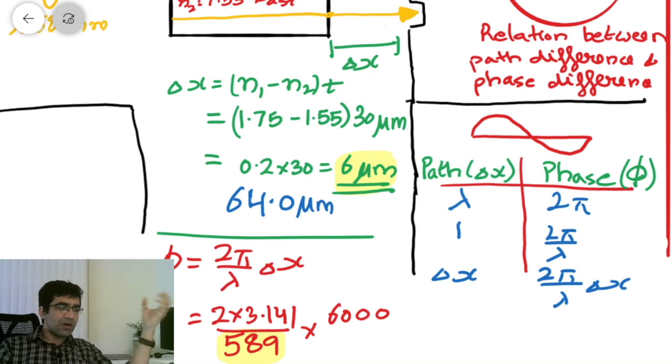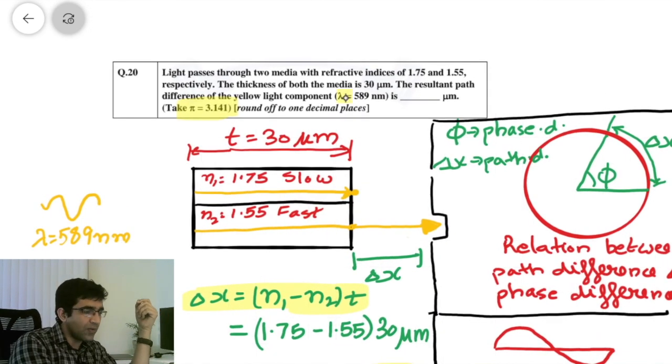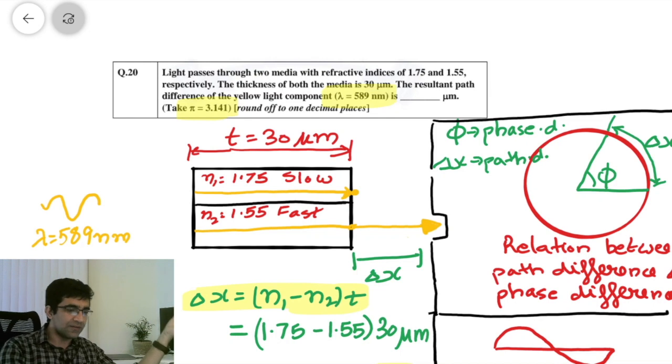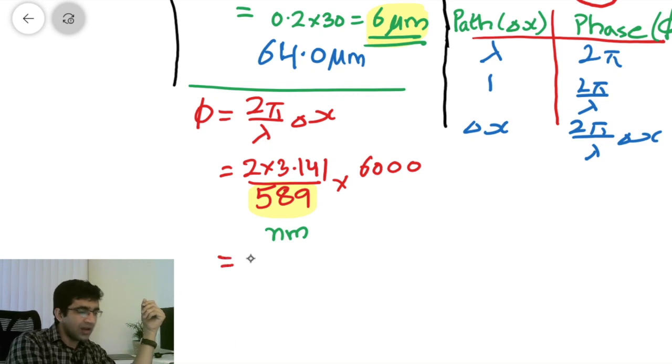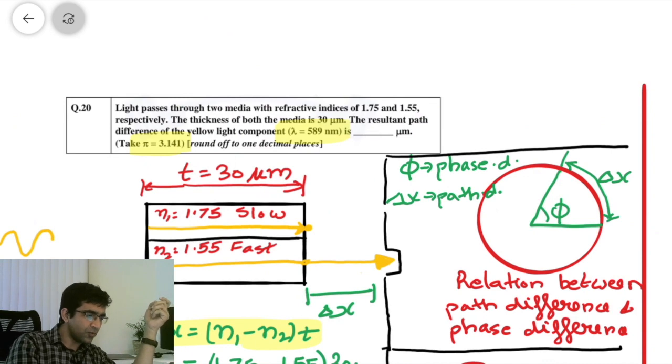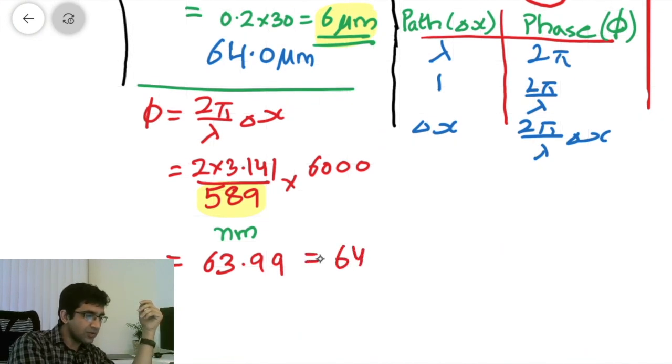Another thing that I would want to point out is that in the original question, if we just use this formula, you would be wondering why they have mentioned pi and why do we have wavelength in here. So you actually do not require these values to calculate the path difference. Now, if you have to calculate the phase difference, this is the formula that you use and you do those calculations. The answer that you will get will be 63.99. Now you are required to round it off to one decimal place. So if you round it off to one decimal place, it will go to 64.0. So this is the correct answer which is given.